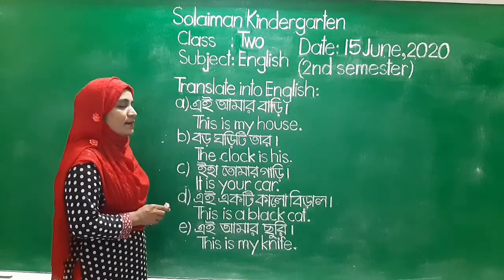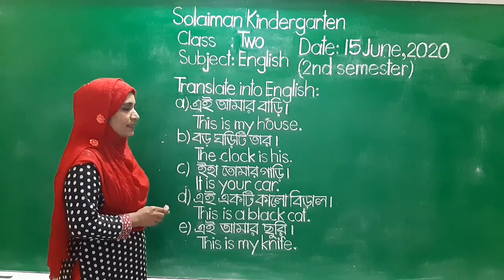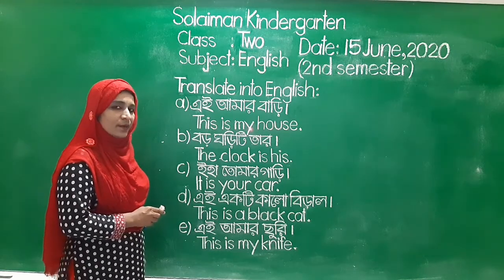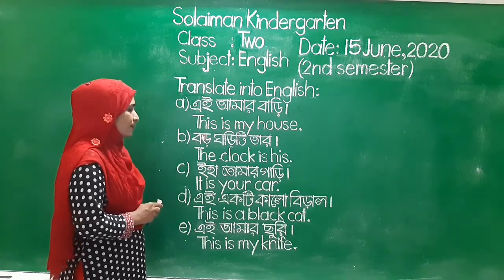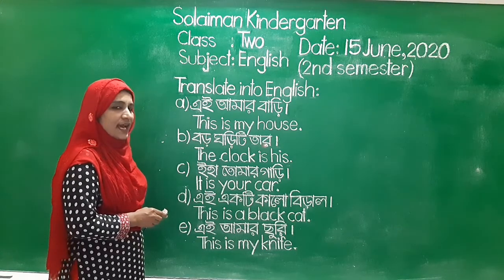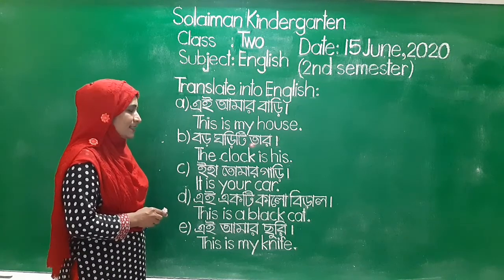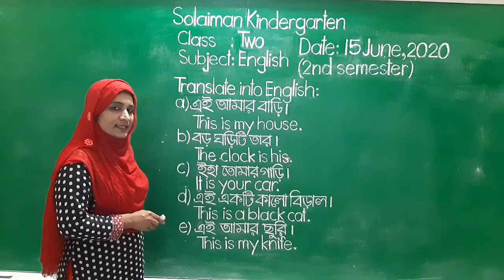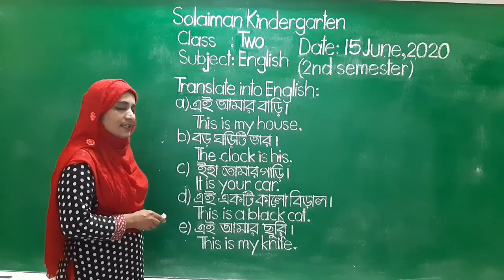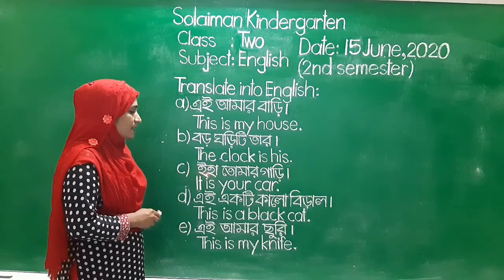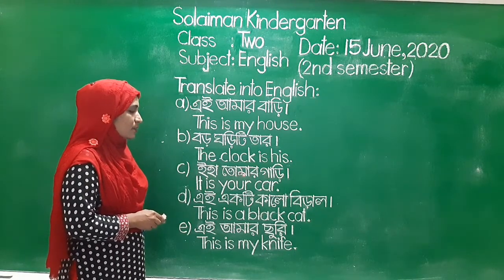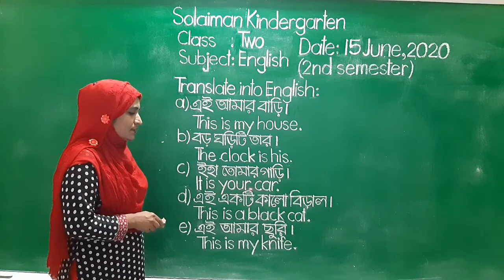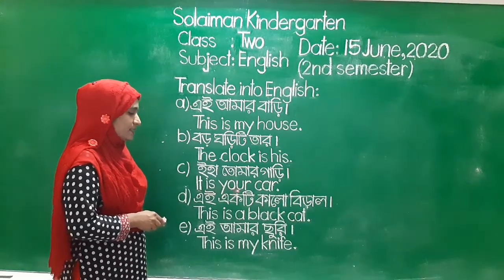Number A: This is my house. This is my house. Number B: The clock is his. The clock is his. Number C: It is your car. It is your car.